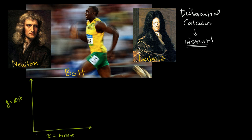If we were to plot Usain Bolt's distance as a function of time, well at time zero he hasn't gone anywhere. We know that this gentleman is capable of traveling 100 meters in 9.58 seconds, so after 9.58 seconds he's capable of going 100 meters. Using this information, we can figure out his average speed — his average speed is just going to be his change in distance over his change in time.